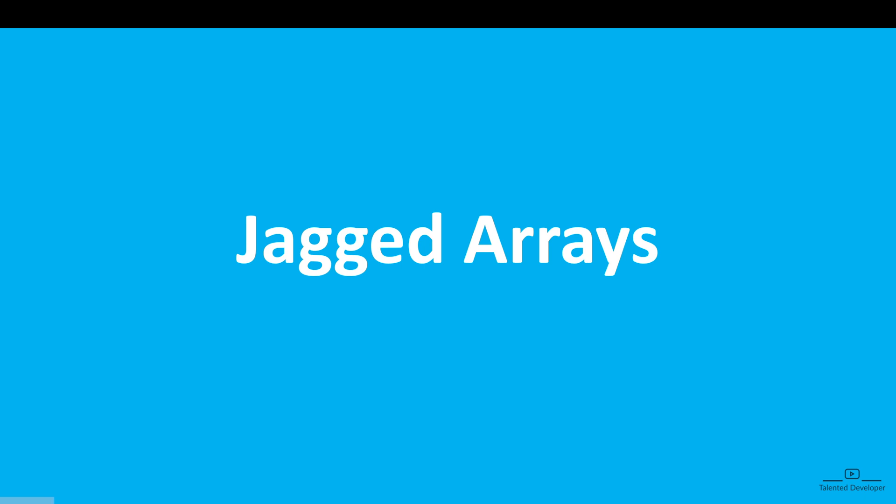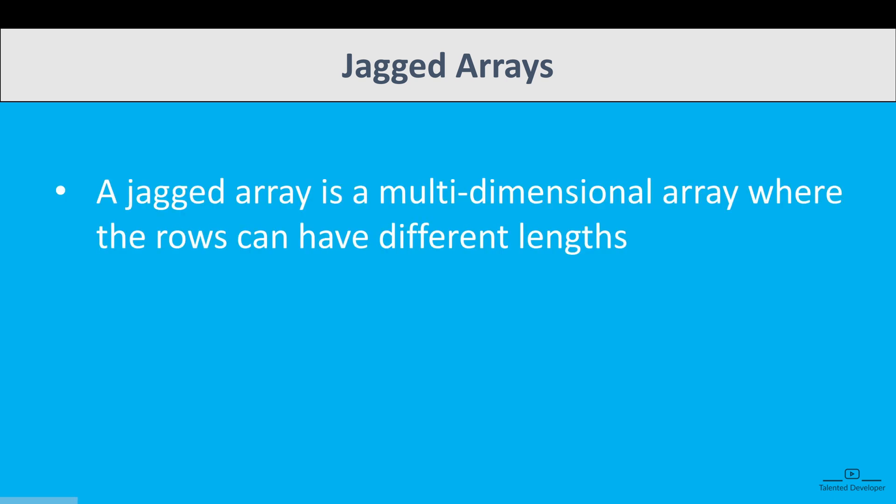That's where jagged arrays come into play. In today's video we're going to learn about jagged arrays. So what is a jagged array? A jagged array is a multi-dimensional array where the rows can have different lengths. This flexibility makes jagged arrays useful in scenarios where data is not uniform, such as storing test scores of students with different numbers of subjects.